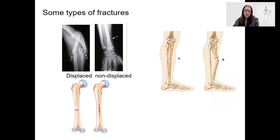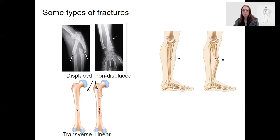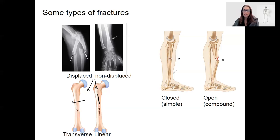Displaced or non-displaced refers to whether the bones are still in alignment or not. For non-displaced fractures, two categories are transverse and linear. You could potentially have a transverse displaced fracture as well if the bone was moved over. This refers to the plane along which the break occurs — a longitudinal plane versus a transverse cross-section break. Closed is a simple fracture and open is a compound fracture, which is typically displaced as well.